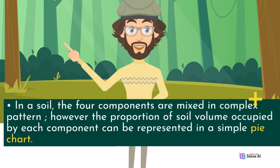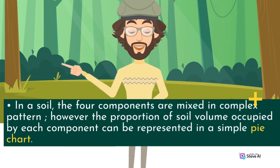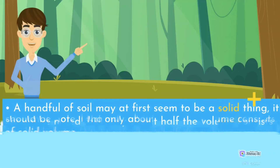In a soil, the four components are mixed in complex patterns. However, the proportion of soil volume occupied by each component can be represented in a simple pie chart.